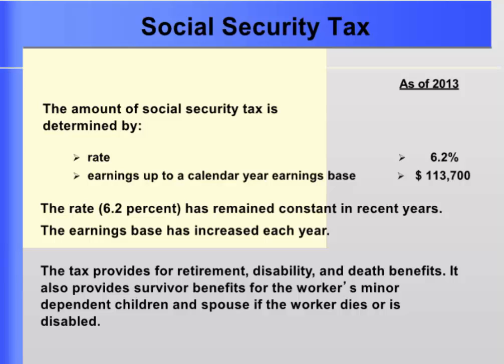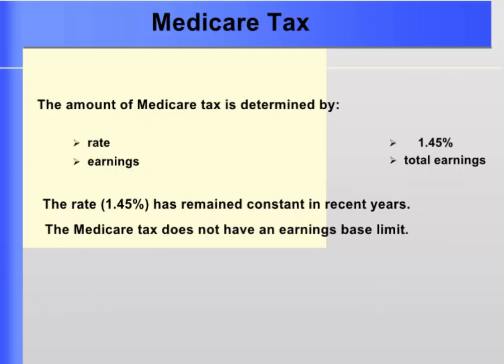The Social Security tax is subject to maximums which often change. As of 2010, the Social Security rate was 6.2 percent with an earnings base of $106,800. Medicare tax is a tax levied on employees and employers to provide medical care for the employee and the employee's spouse after each has reached age 65. The current Medicare tax rate is 2.9 percent, with 1.45 percent withheld from the employee's paycheck and the other 1.45 percent paid by the employer.